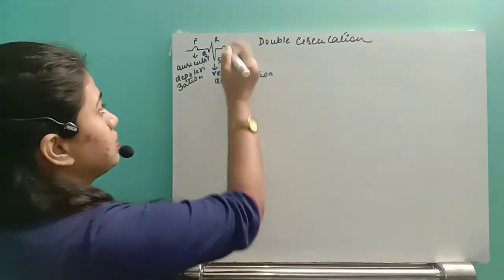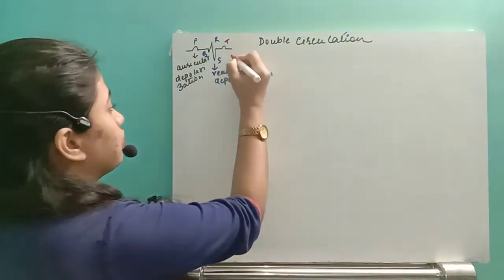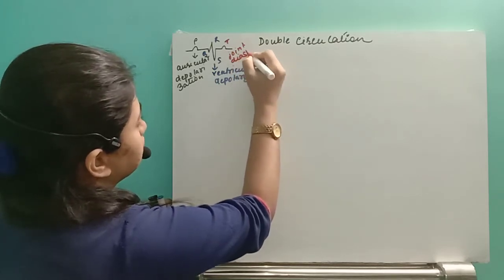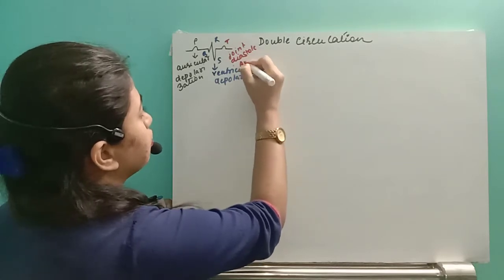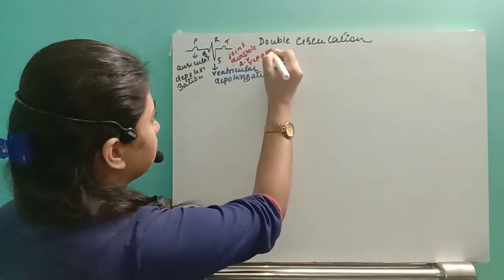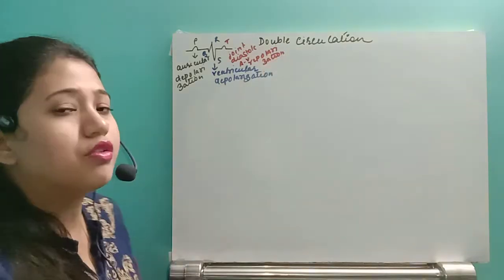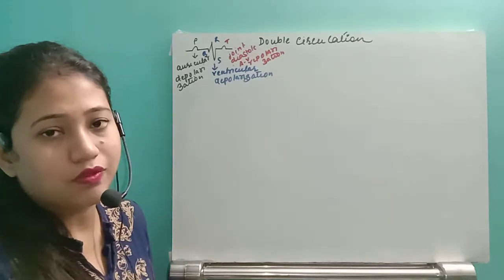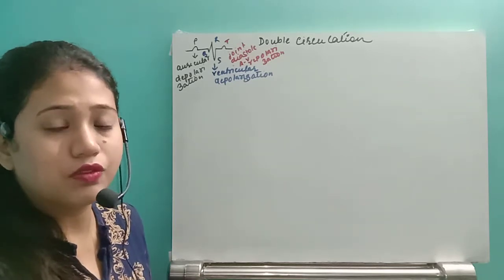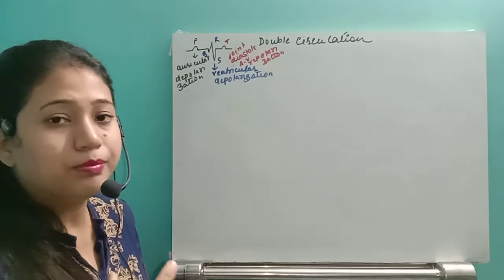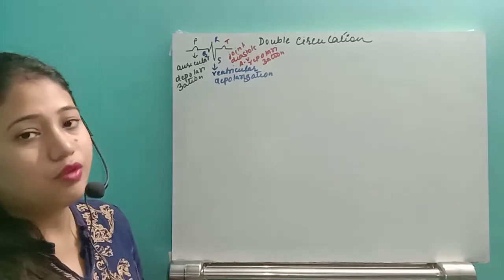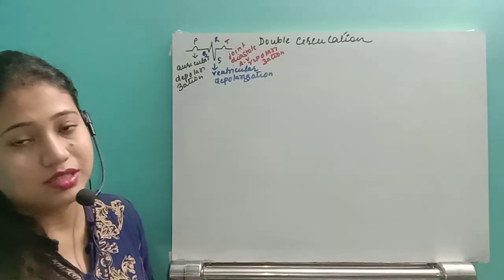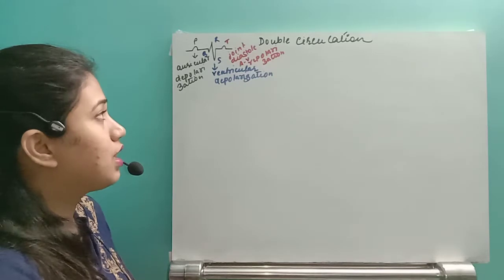The last one is the T wave. The T wave indicates joint diastole, also called auriculoventricular repolarization. This means both the auricles and ventricles will relax. When both relax, the volume increases and blood from all parts of the body will enter inside the heart — that is represented by the T wave. That is all about the ECG.